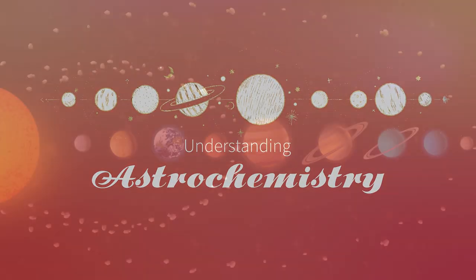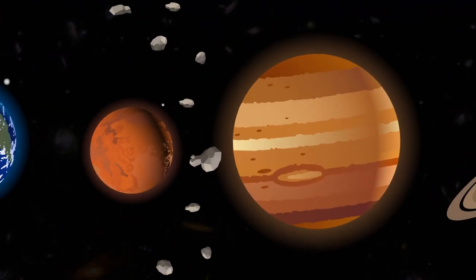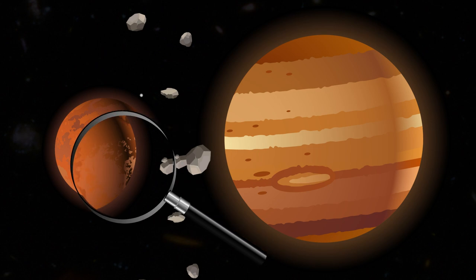Understanding Astrochemistry. Over the past few decades, astronomers have learned more and more about the planets, moons and asteroids of our solar system, but we still have much to learn about the materials they are made from.